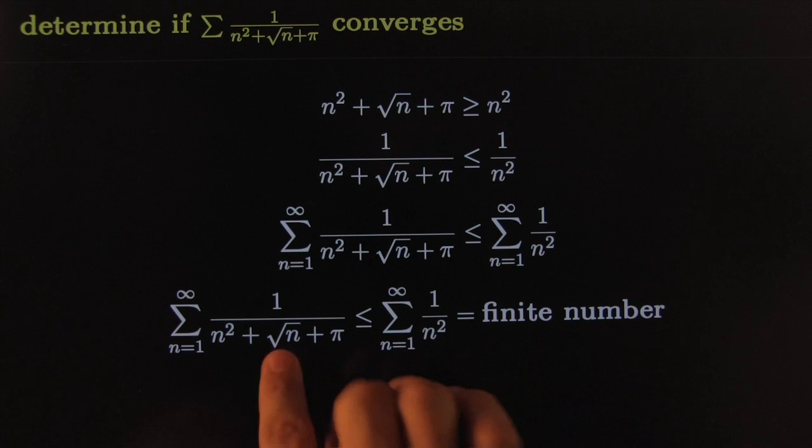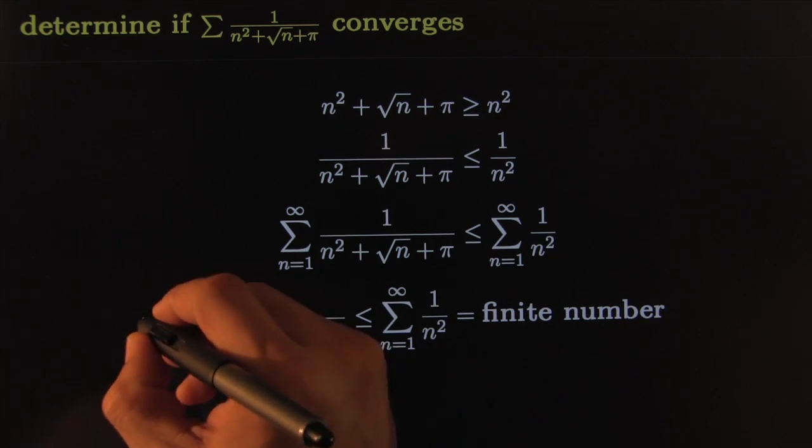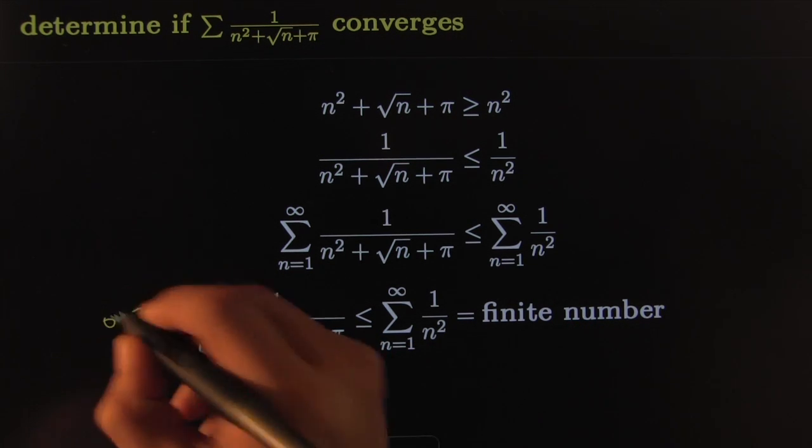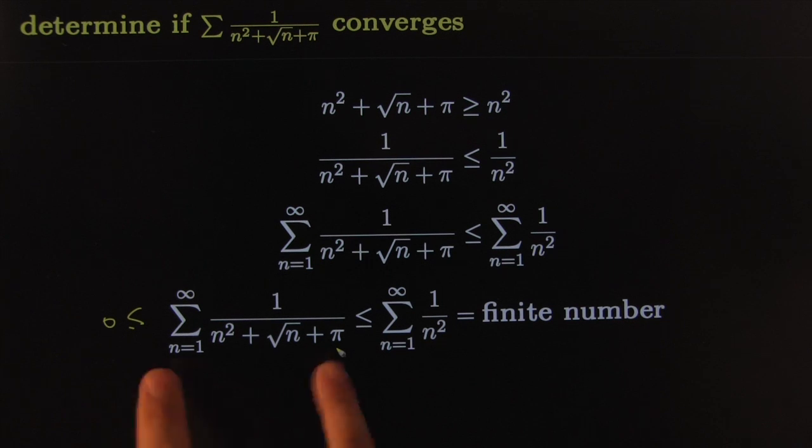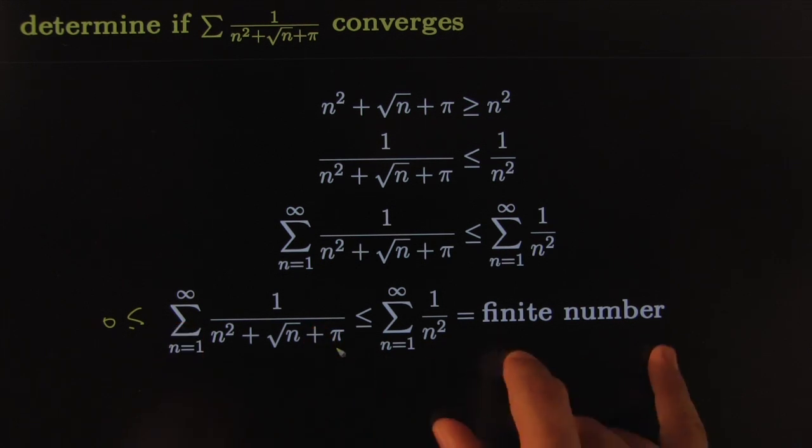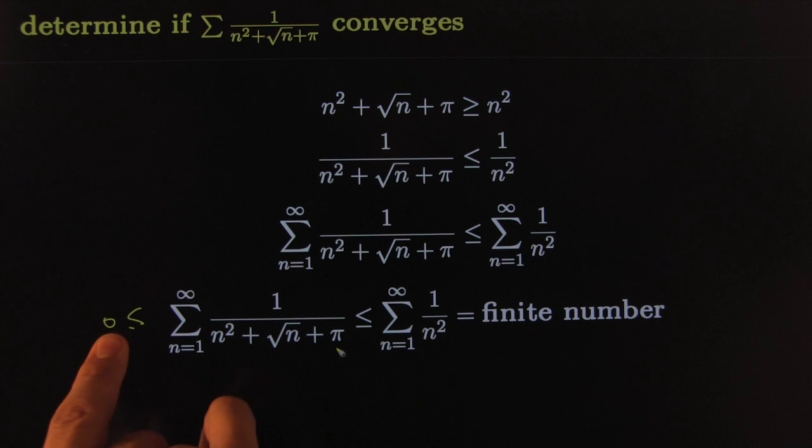This is finite and this is obviously positive. The reason it's positive is because all the denominators are positive. This traps this one into something that's less than or equal to something finite and bigger than zero.